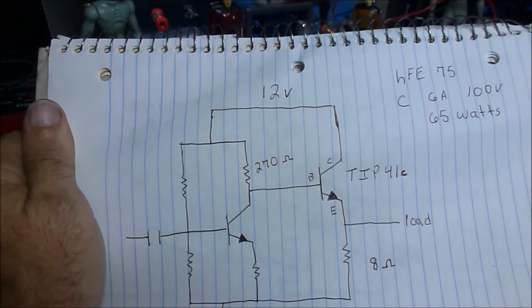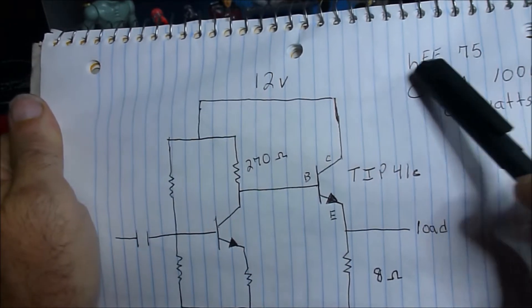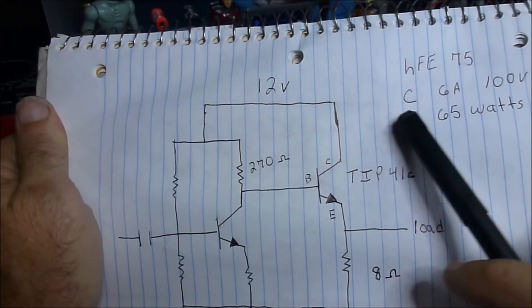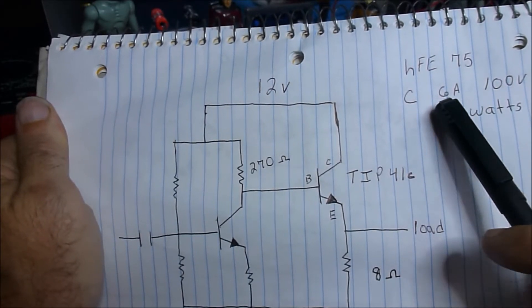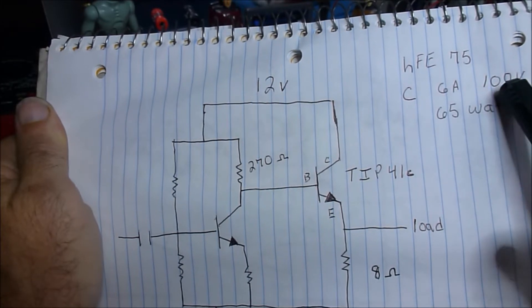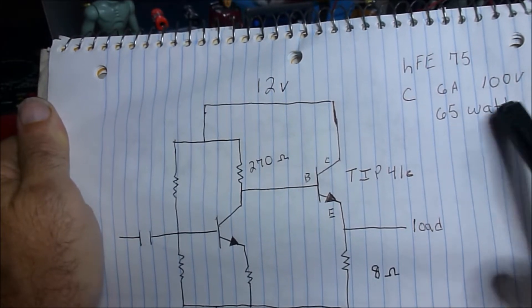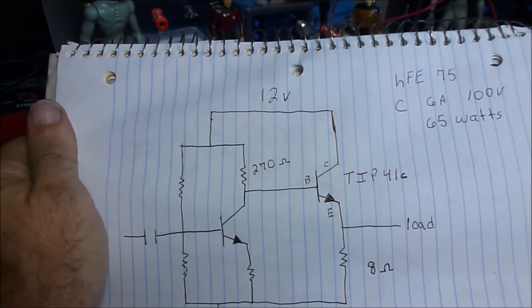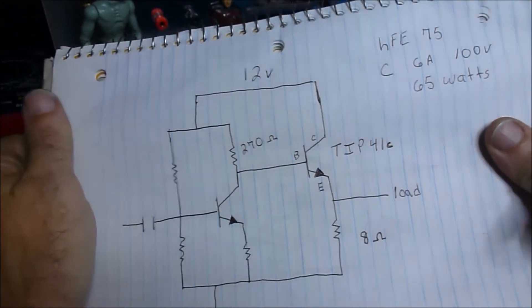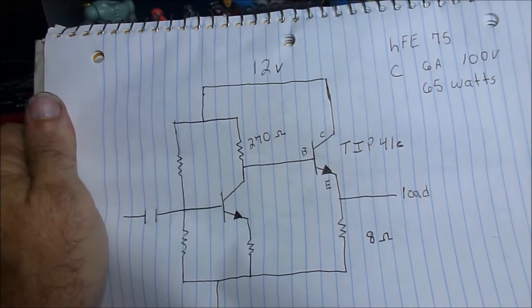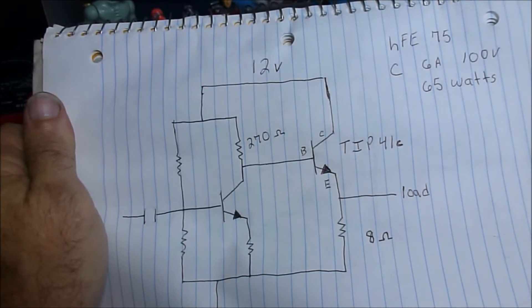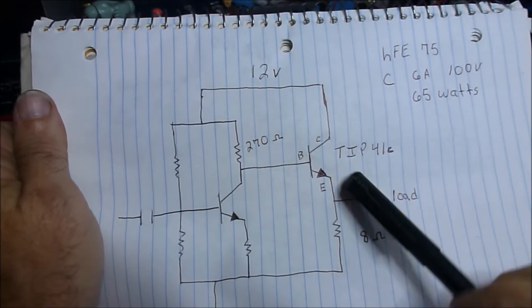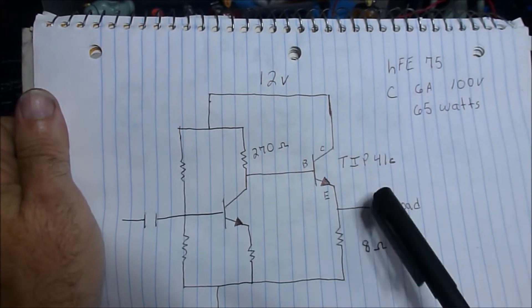We have our same circuit as we had before. I'm going to use a TIP41C transistor. It has a gain of 75. The collector current, the specs of it, can't push over 6 amps to it or 100 volts and a max of 65 watts. We're not going to do anything near that. I'm figuring this circuit will have an output when I get done, roughly about maybe a quarter of a watt or so.